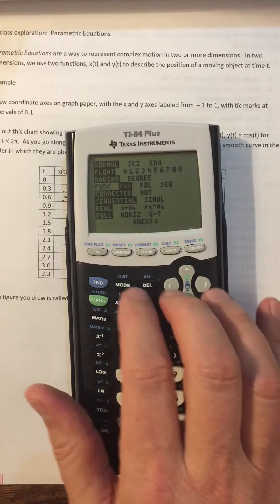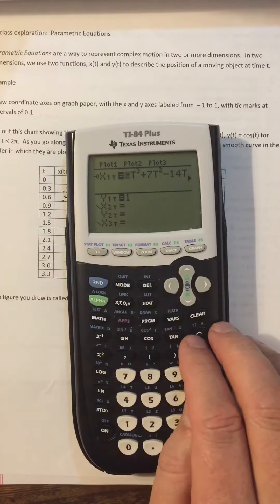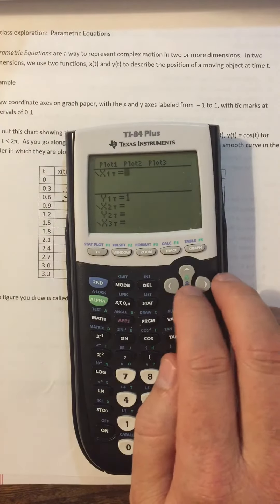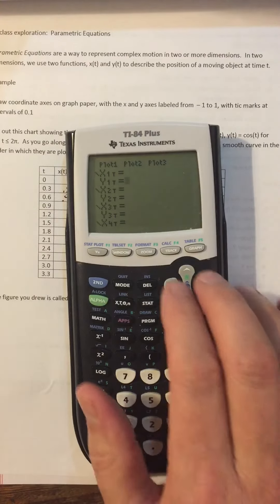And then so now when I go to my y equals I have leftovers from my previous problems, so I'm going to clear that out. But I see how I have x1t, y1t, et cetera, so I'm going to clear all those out.